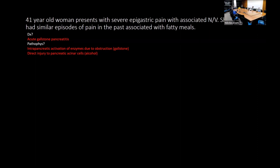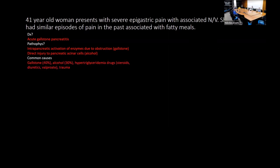Common causes of pancreatitis: the two most common are gallstones and alcohol. The mnemonic GET SMASHED covers: Gallstones, Ethanol, Trauma, Steroids, Mumps, Autoimmune, Scorpion sting, Hypercalcemia, Hypertriglyceridemia (typically over 1000, seen in type I hyperlipidemia/chylomicronemia), and ERCP and Drugs — including thiazide diuretics and other medications.